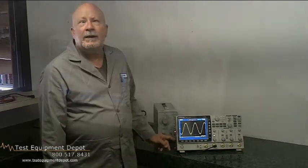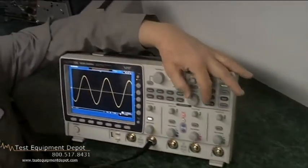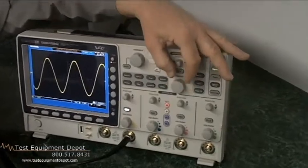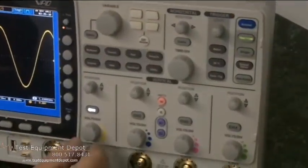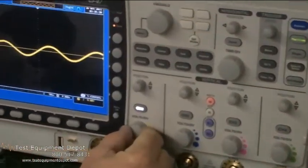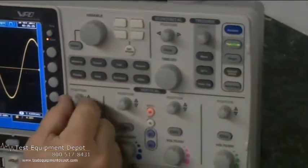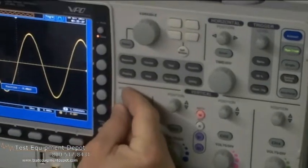This is a 350 megahertz four channel color digital storage oscilloscope. It has dual sampling rates, 5 gigasamples per second real time sampling rate and a 100 gigasample per second equivalent time sampling rate available.